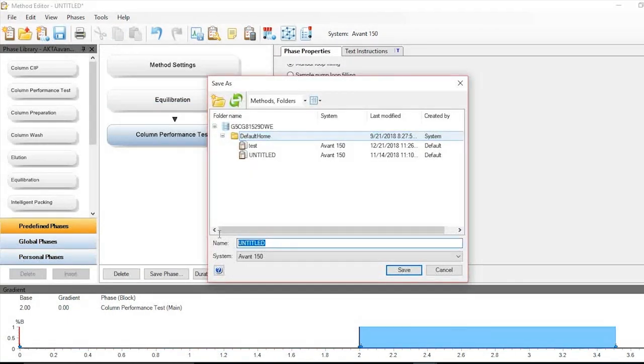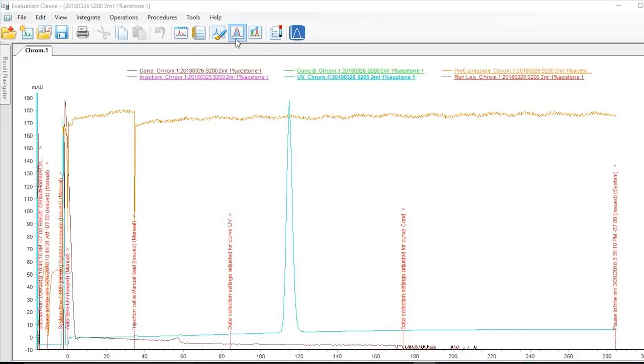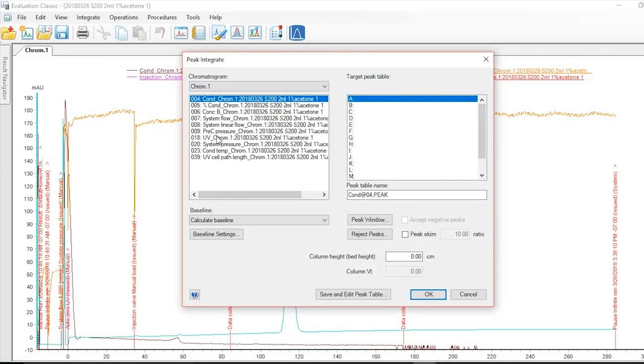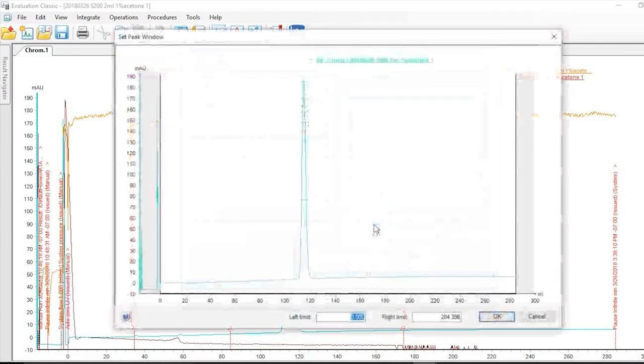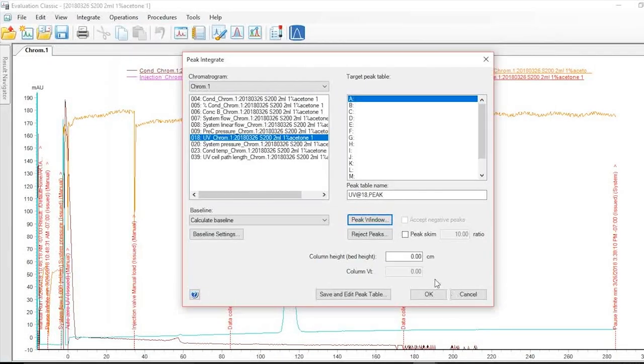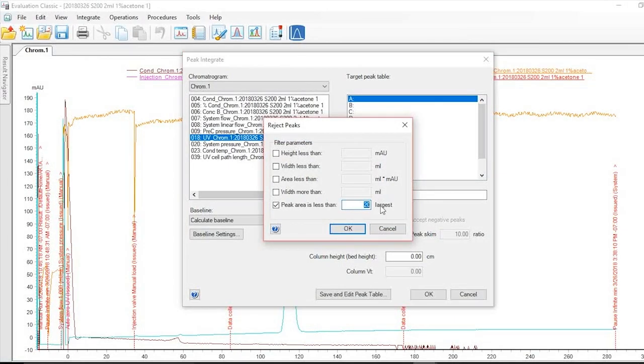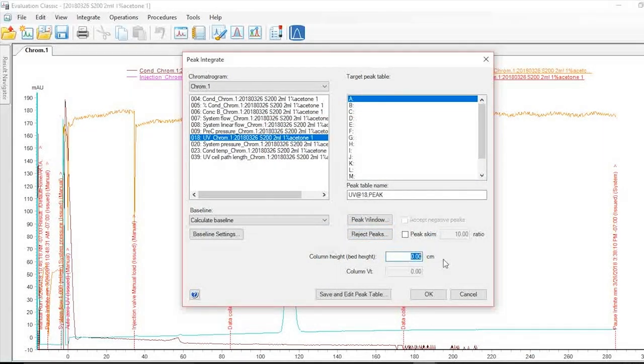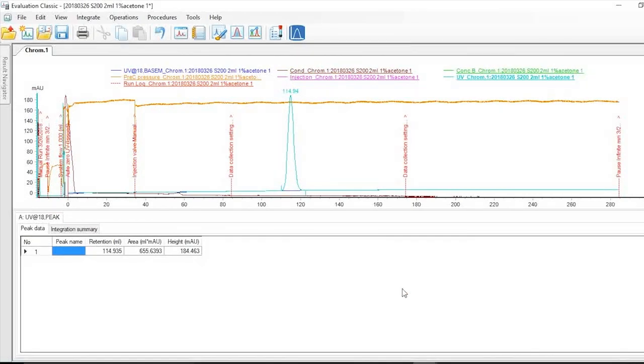Apply the sample and start the method. When this run ends, open the result and integrate the UV signal. Type in the bed height of the packed column. Click right in the data table, select HETP and asymmetry. Here, you can find the relevant values of column performance in the data table.